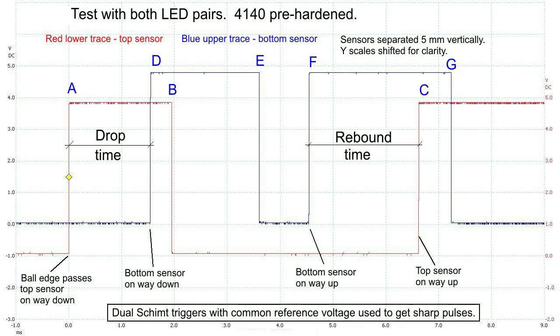Let's look at the timing we get from the drop sensors after they've passed through the Schmitt trigger. Here we have the output of both Schmitt triggers. They've been shifted vertically purely for visual clarity. The lower signal is the one from the top sensor, and the upper signal is from the bottom. The first important event is to start the timing as the ball passes downwards past the top sensor, that is at point A.